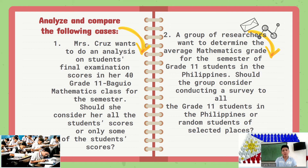Let us start with Scenario Number One. Mrs. Cruz wants to do an analysis on students' final examination scores in her 40 Grade 11 mathematics class. For her to know the entire performance of the class in mathematics, she used the entire population to get the average. That is correct and very accurate because she included all the population.